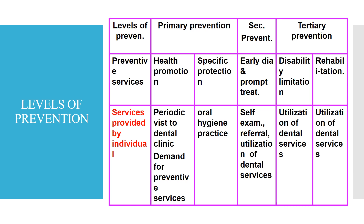Levels of prevention by the individual: under primary prevention and health promotion, periodic visits to dental clinics and demand for preventive services, provided by health educators. Under specific protection, oral hygiene practices are taught. Secondary prevention includes early diagnosis, self-examination, referral and utilization of dental health services. Under tertiary prevention: disability limitation and rehabilitation through utilization of dental services.